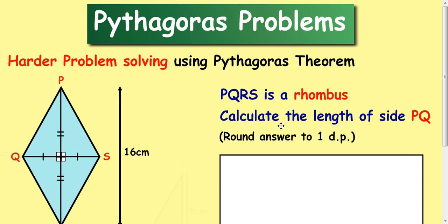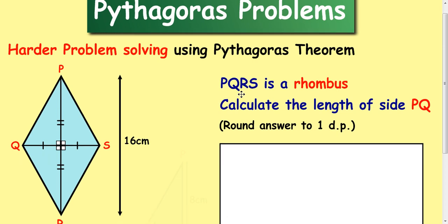In this lesson we're going to look at another example of Pythagoras problem solving. So let's look at the question. PQRS is a rhombus. Calculate the length of side PQ, and it also says round your answer to one decimal place. If you do not do this you will lose a mark in the marking scheme.